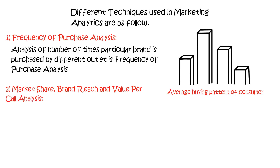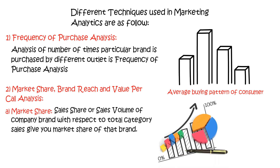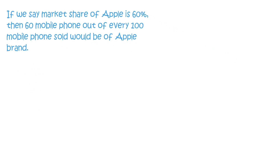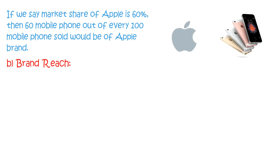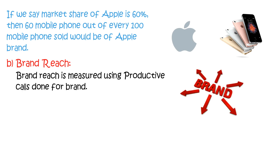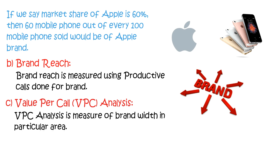The second technique is market share, brand reach, and value per call analysis. Market share refers to the sales share or sales volume of a company's brand with respect to total category sales. For example, if the market share of Apple is 60%, then 60 out of every 100 mobile phones sold would be the Apple brand. Brand reach is measured using productive calls done for the brand. Value per call analysis is a measure of brand width in a particular area.